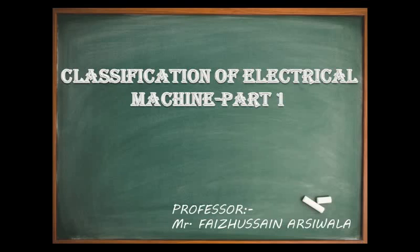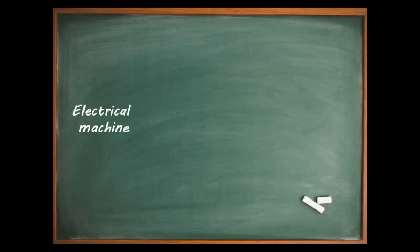The stator is composed of field windings that make up magnetic poles to generate a magnetic field, as we saw in lecture one. The rotor has rotating coils to allow current to flow through it; it is also called the armature.